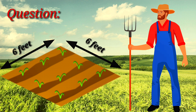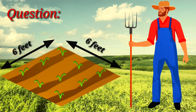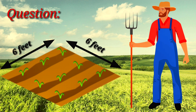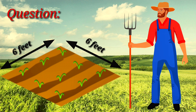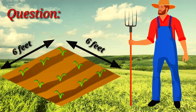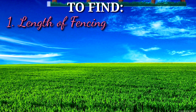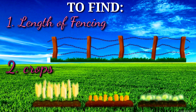Now let's solve a question. There is a farmer who has a big square land which measures 6 feet on all sides. He has to grow crops inside that land and also protect his land by fencing its boundaries. We need to find the length of fence required to cover the boundary, and the area of crops he has to grow inside — crops jo usko land ke andar grow karni hai.